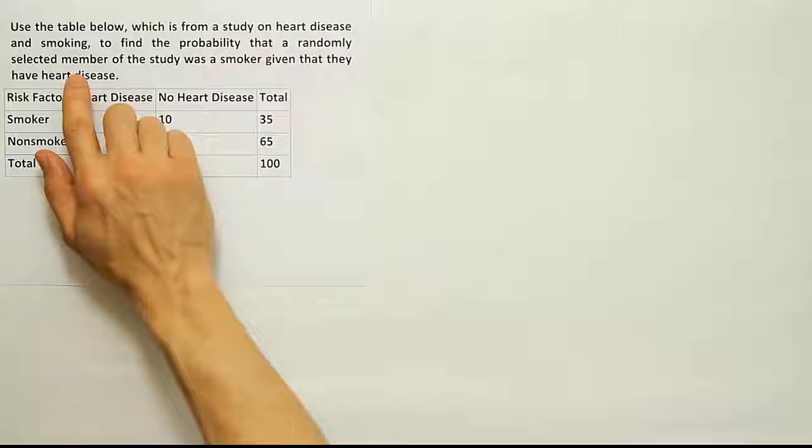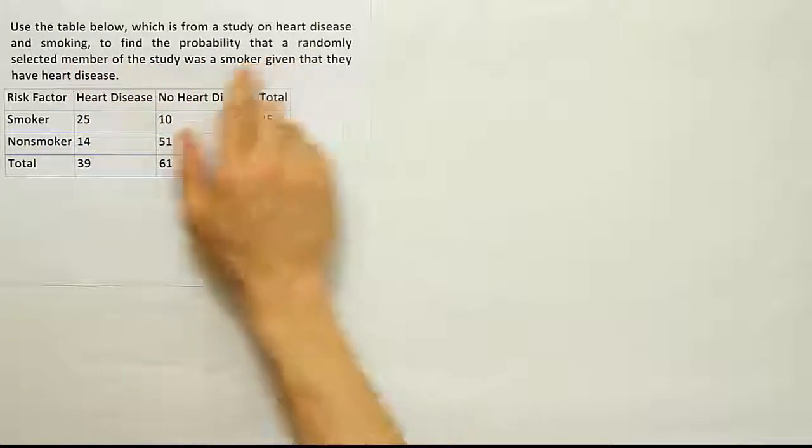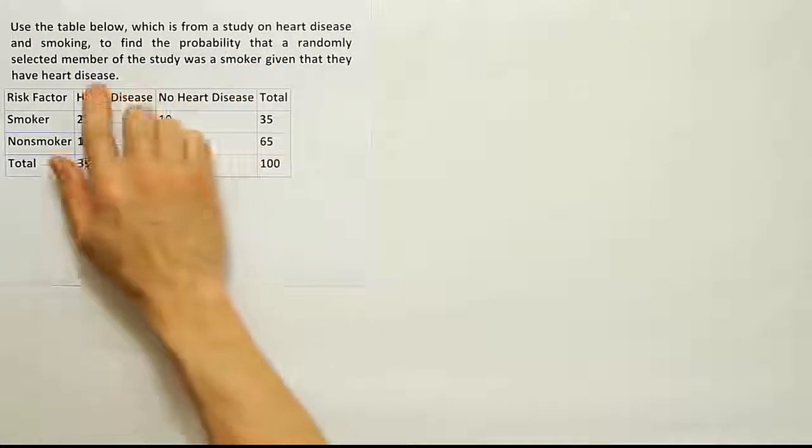Use the table below which is from a study on heart disease and smoking to find the probability that a randomly selected member of the study was a smoker given that they have heart disease.